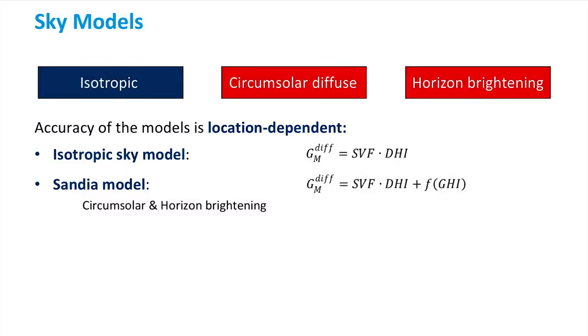Then, we have the Sandia model. The Sandia model also takes the circumsolar and horizon brightening into consideration by means of an empirical formula that is a function of the sky view factor diffuse horizontal irradiance and global horizontal irradiance. The Hay and Davis model is a bit more complex. It requires measurements of the DHI and then corrects for not only the sky view factor but also for the angle of incidence. It takes into account isotropic and circumsolar components.